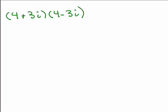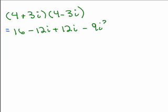Let's look at this next one: 4 plus 3i times 4 minus 3i. We've got 4 times 4 is 16, the outer term is minus 12i, the inner term is plus 12i, and the last term is minus 9i squared.